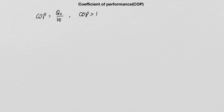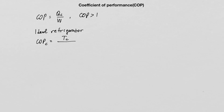The efficiency with which a refrigerator removes heat from the cold region and deposits it into the hot region is called the coefficient of performance, or COP. The coefficient of performance is calculated as the amount of heat extracted from the cold region divided by the work done by the refrigerator. The COP is always larger than one. For an ideal Carnot refrigerator, the coefficient of performance is calculated as the ratio of the temperature of the cold region to the difference between the hot and cold temperatures — Tc divided by (Th minus Tc) — where Tc and Th must be in Kelvin.